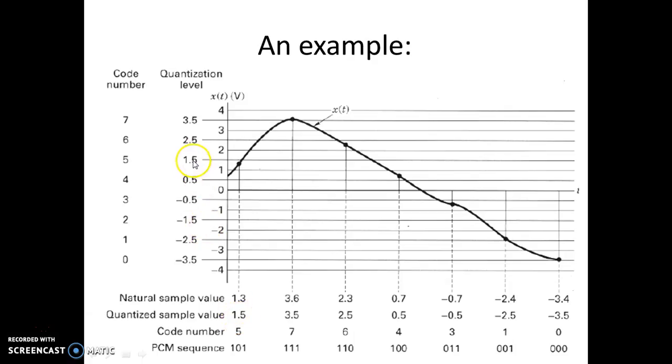Each of these quantization levels can take a code number. Here 1.5 has taken the code number 5. 3.5 has taken the code number 7. It is shown here in order. And from 0 to 7 for transmission for PCM, for pulse coded modulation transmission, we are able to encode these code numbers to binary digits.